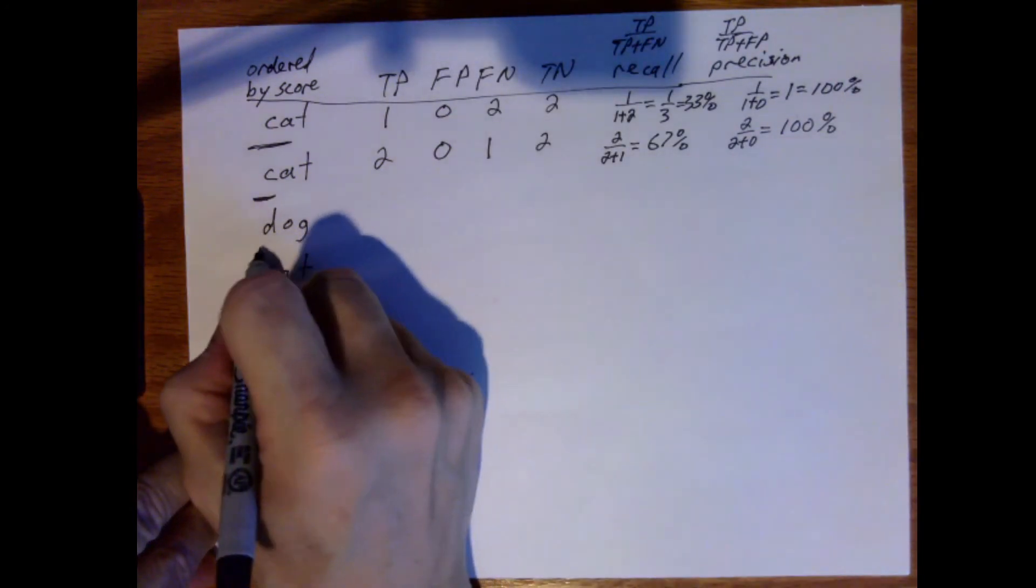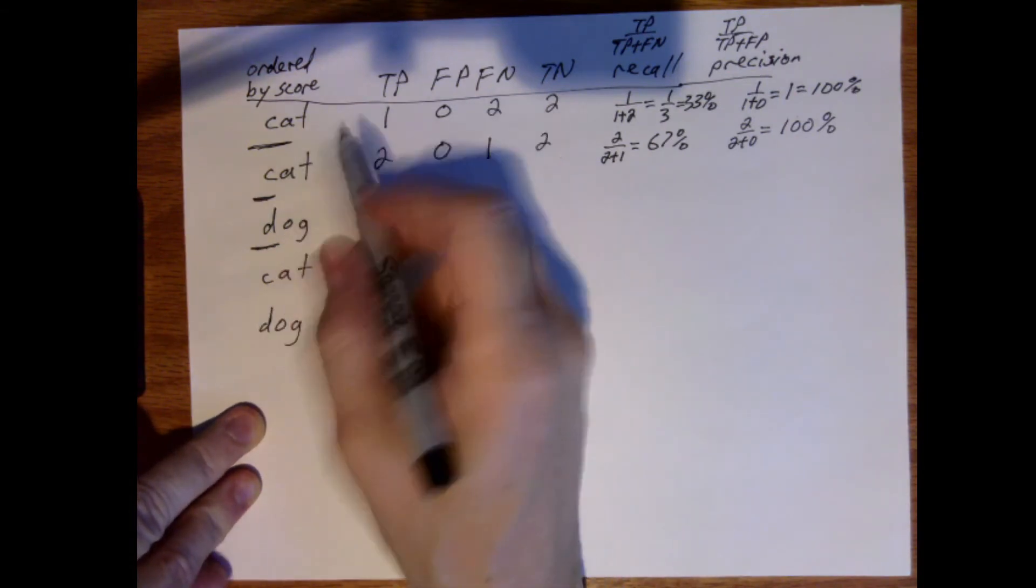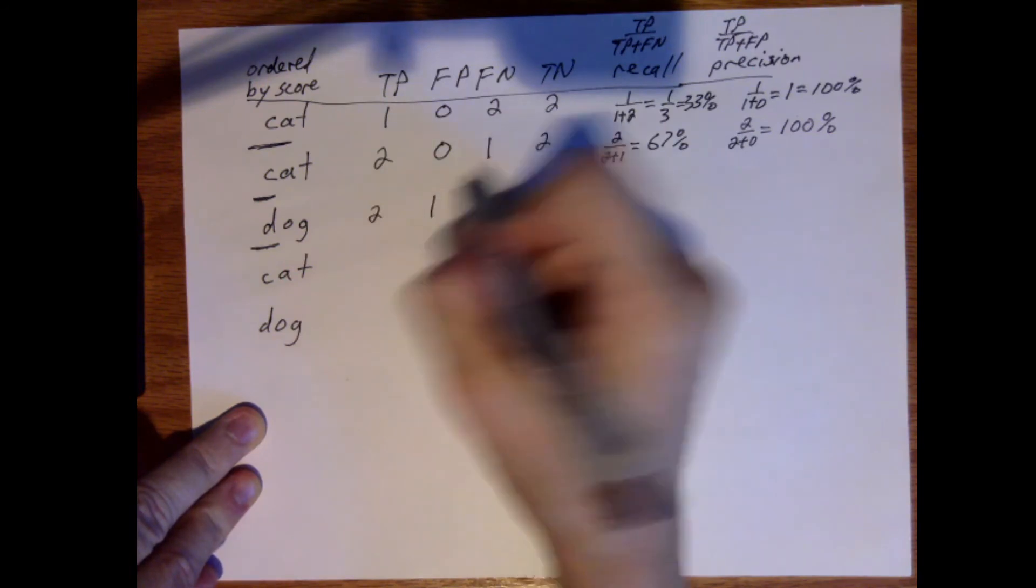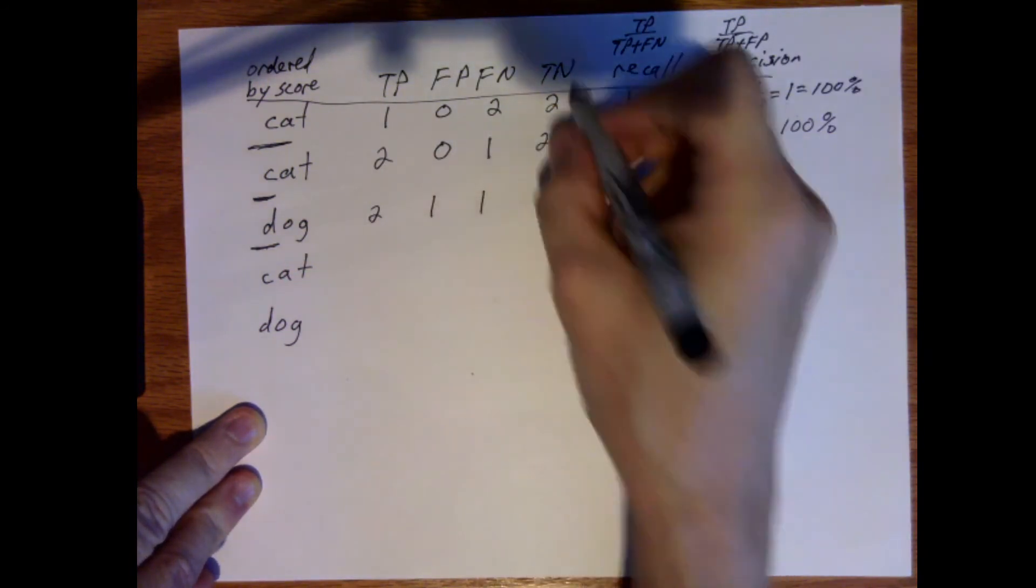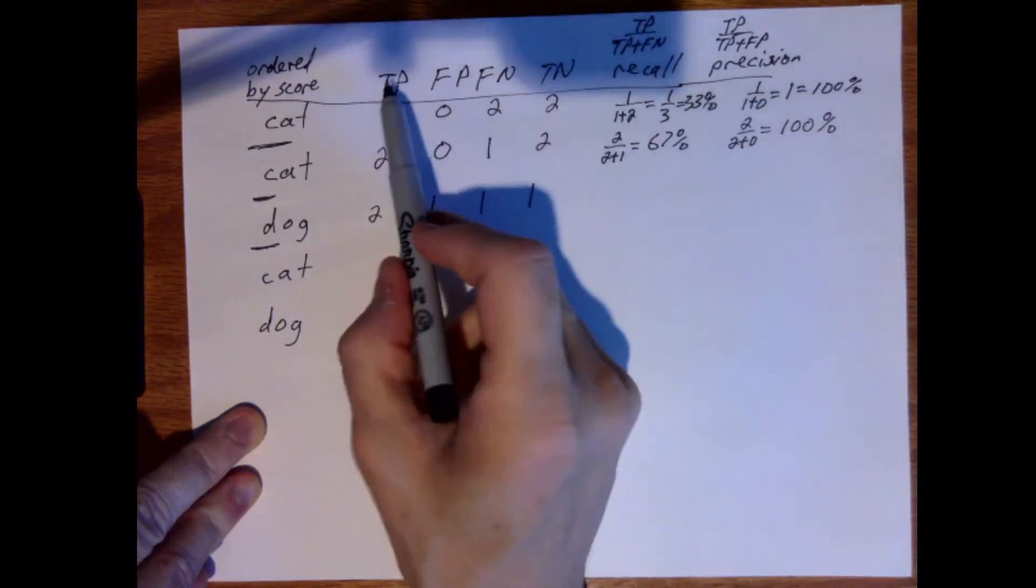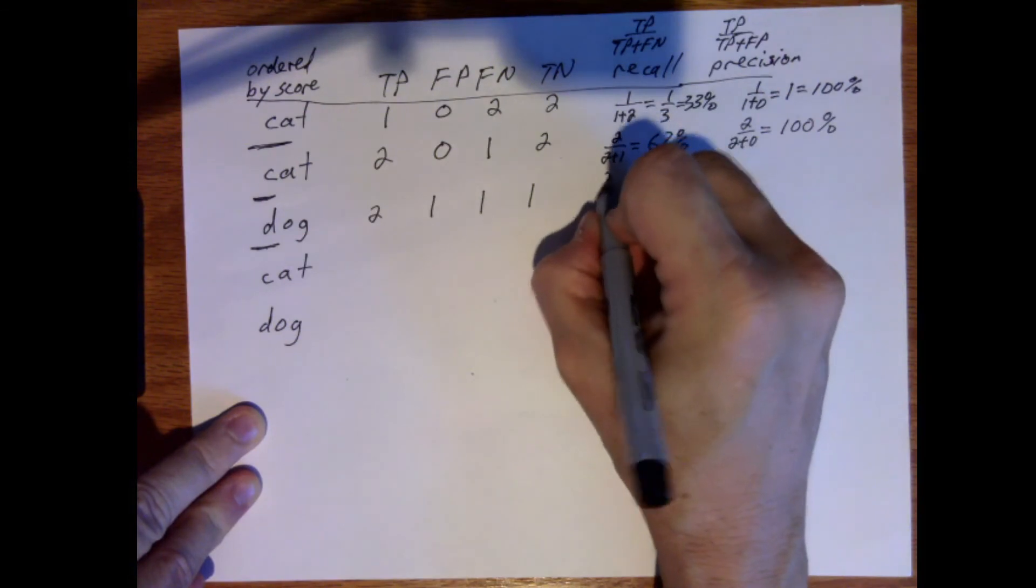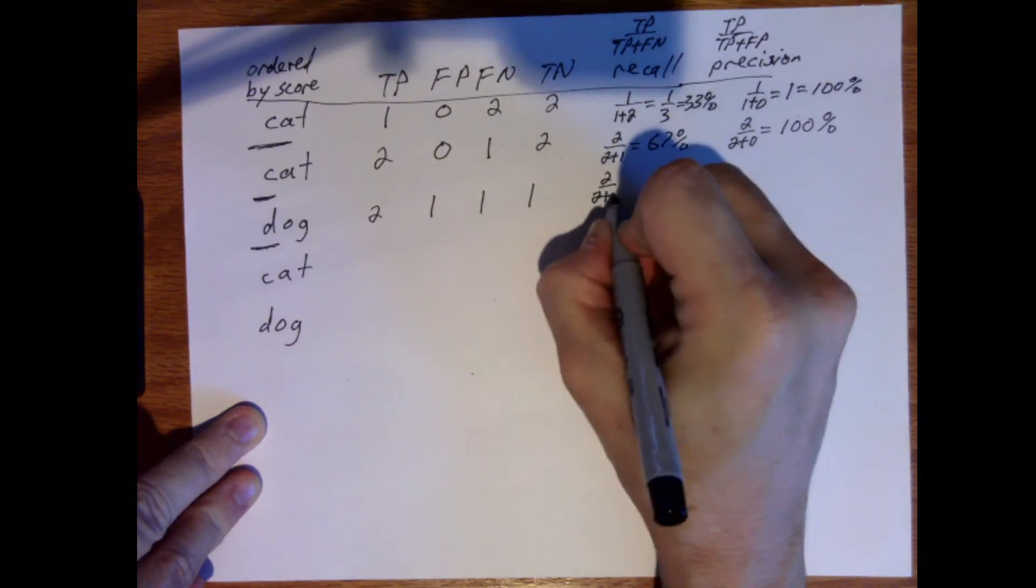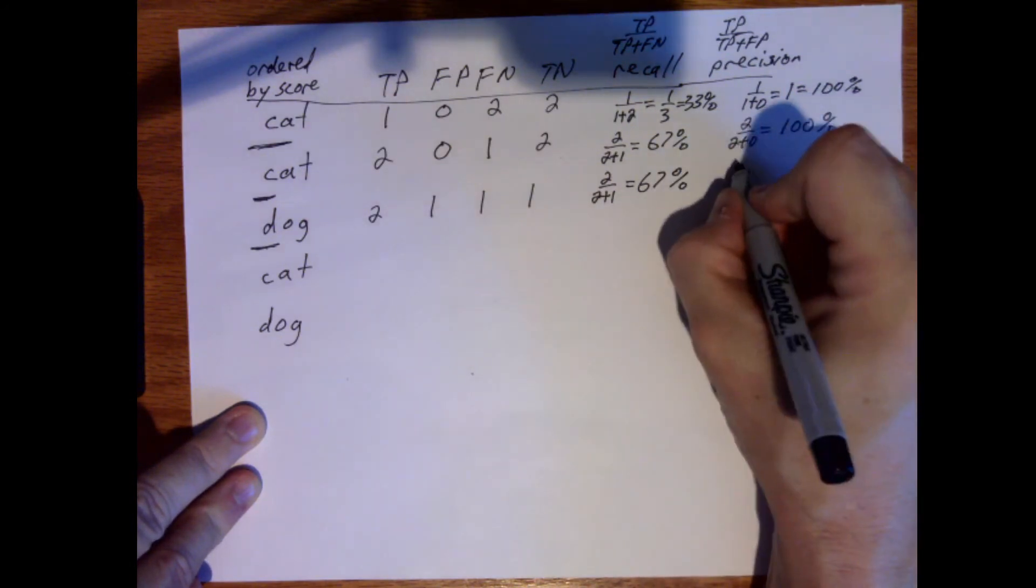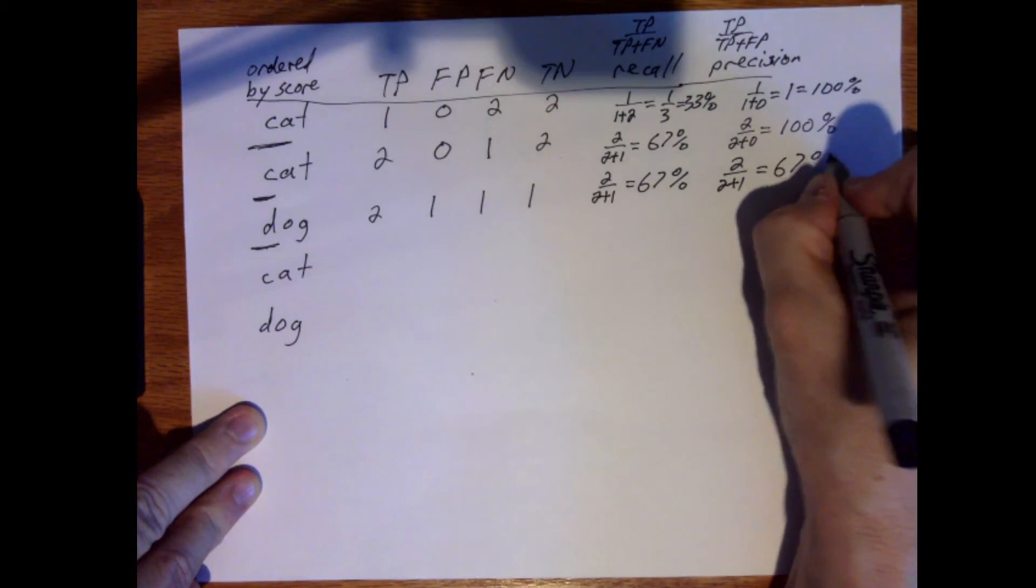Lower the threshold to here. So now what we get are two cats and a dog. That was what we saw in our original example. So true positives are two. False positive is one. False negative is one. And true negative is one. So true positive divided by true positive plus false negative. Two divided by three, which is 67%. And this would be two divided by two plus one, which is also 67%.